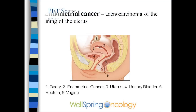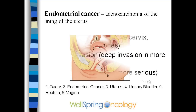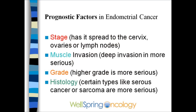The cancer starts in the endometrium and can invade the muscle or spread elsewhere. The prognostic factors that predict cure rates include the stage, the degree of muscle invasion, the grade, how mutated the cells are, and the histology — the specific type of cancer under the microscope.